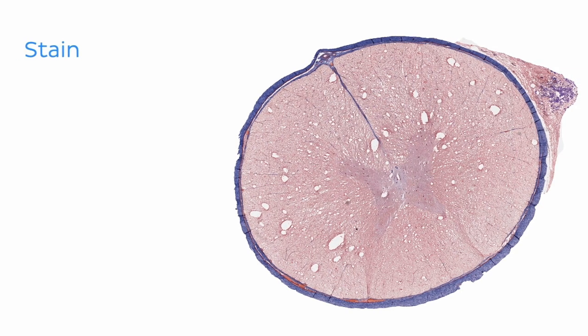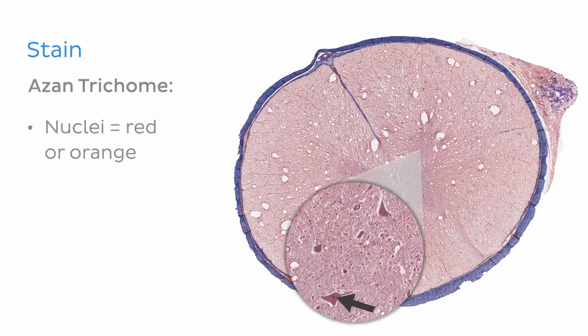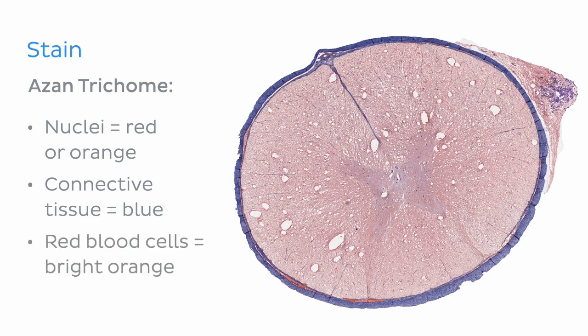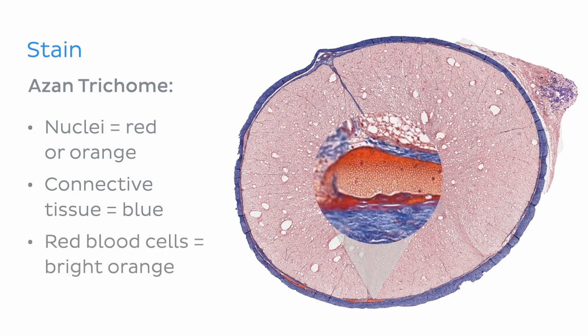The stain used in our image here is known as azan trichrome. With this stain, the nuclei appear red or orange — perhaps more maroon on our slide here. The connective tissue stains blue, and red blood cells stain bright orange. You can see a few in the lower left portion of the slide.